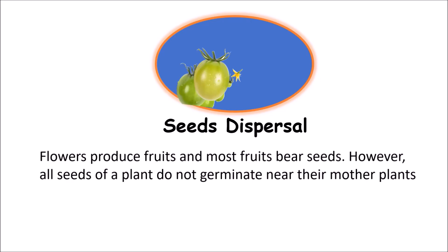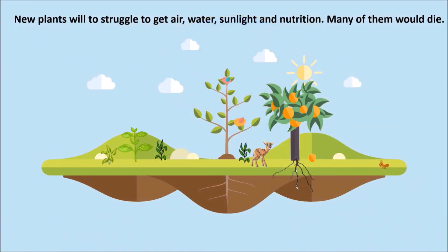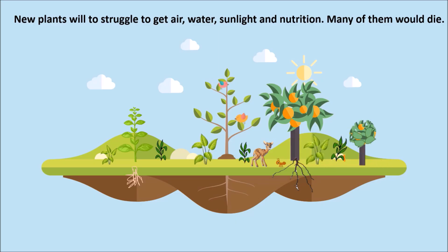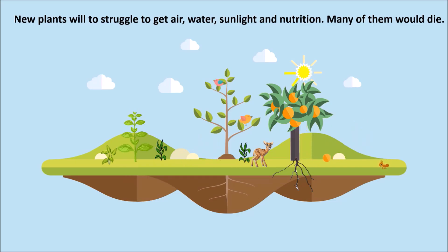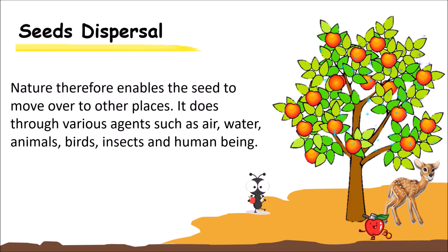Flowers produce fruits, and most fruits bear seeds. However, all seeds of a given plant do not germinate near their mother plants, because they would then have to struggle to get sufficient air, water, sunlight and nutrients. Many of them would die. Nature, therefore, enables seeds to move over to other places.